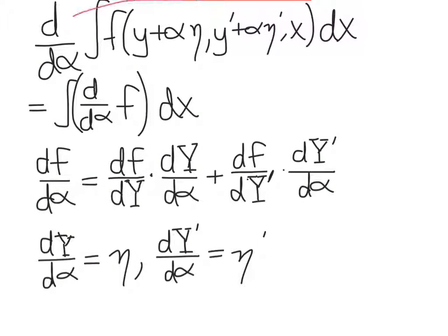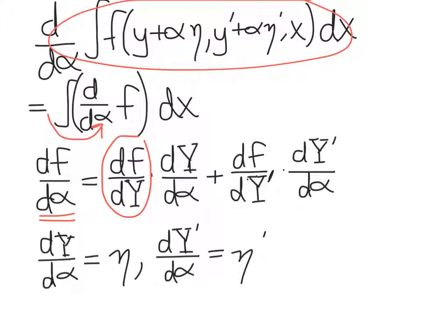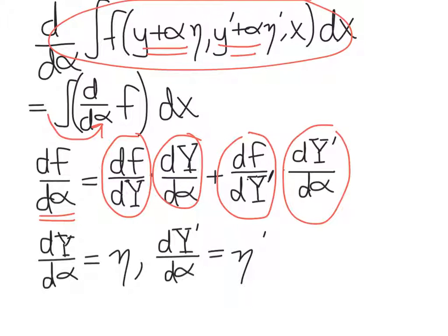We take the α derivative of the integral. Since the endpoints x₁ and x₂ are independent of α, we bring the derivative inside the integral and apply it to the functional f itself. By the chain rule, the α derivative of f involves: the derivative of f with respect to capital Y times the derivative of capital Y with respect to α, plus the derivative of f with respect to Y prime times the derivative of capital Y prime with respect to α. Given how we defined capital Y and Y prime, those α derivatives are simply η and η prime respectively.